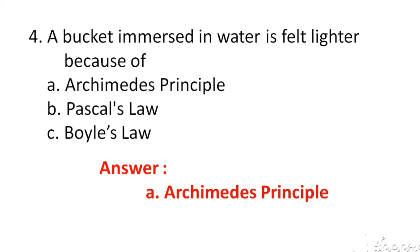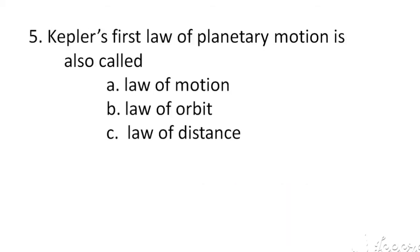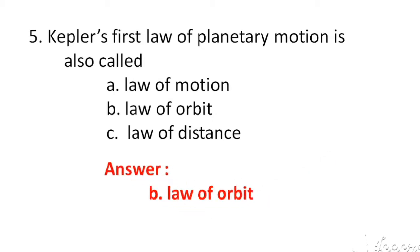Kepler's first law of planetary motion is also called. The options are A. Law of motion, B. Law of orbit, C. Law of distance. The right answer is B. Law of orbit.